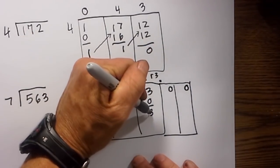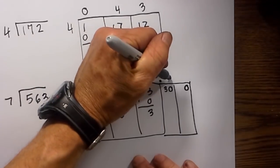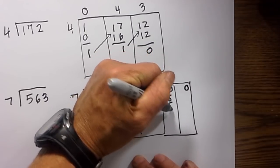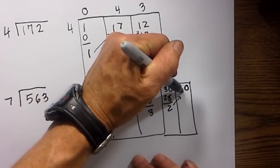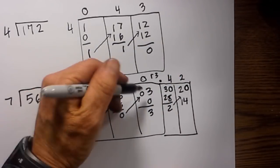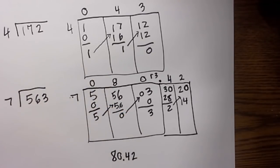I then just continue the method. This three moves up here. Seven into thirty goes four times. Four times seven is twenty-eight, so I have two remaining. Move two to the next column. Seven goes into twenty two times. Seven times two is fourteen, and we can leave it there. So the answer would be 80.42 to two decimal places.